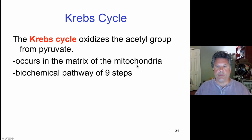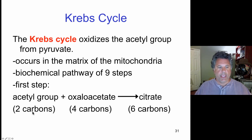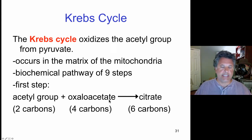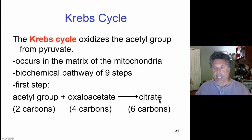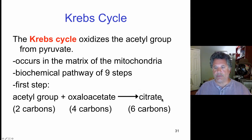The Krebs cycle occurs in the matrix of the mitochondria. It is a biochemical pathway of nine steps in which the two carbons donated by pyruvate to acetyl coenzyme A, plus oxaloacetate — a four-carbon compound, oxaloacetic acid — yield citrate, that is citric acid, a six-carbon molecule. This occurs in the first step of the Krebs cycle: the two carbons join oxaloacetate to form a six-carbon molecule. The Krebs cycle is also known as the citric acid cycle because citrate is the first intermediate produced.